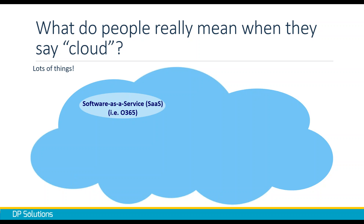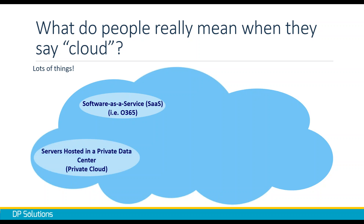Software as a Service (SaaS) is when you get a service, often through a web browser, that someone else provides and you pay a subscription for. Office 365 is one example with a web version; QuickBooks Online is another. We have to consider what kind of work we're doing in them, since we're communicating from a device we control to some data center in an unknown location that may have sensitive assets in it.